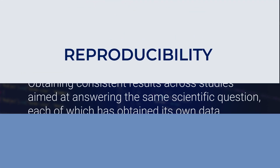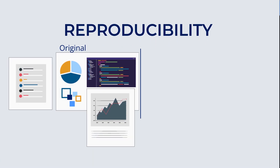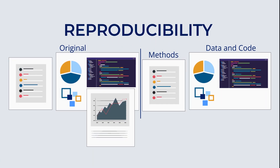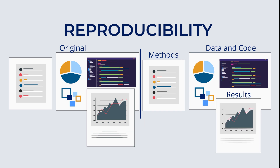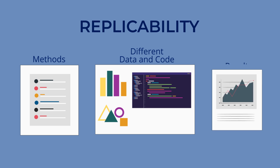One way to think about the difference between reproducibility and replicability: reproducibility is when you use those same methods or procedures with the same data and code used in the project to see if you can get the same results. Whereas with replicability, you use the same procedures but go out and collect new data, and potentially write new code, to test the hypothesis or research question and see if you get the same results.